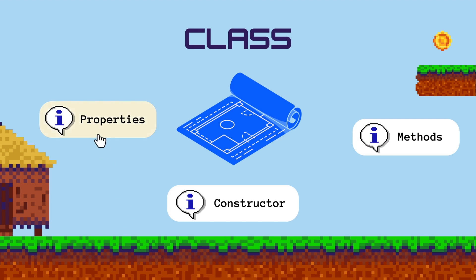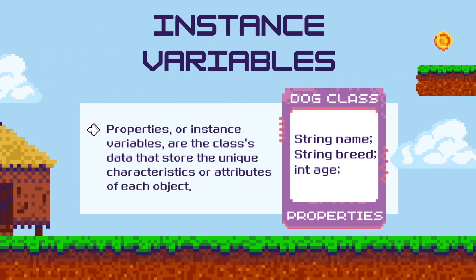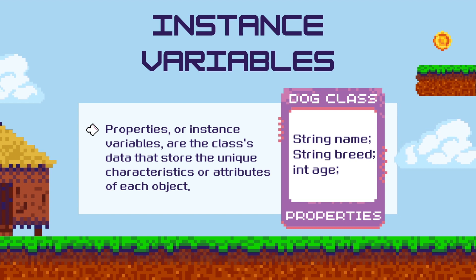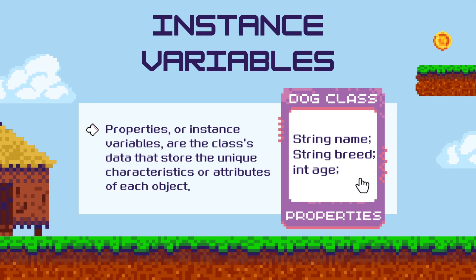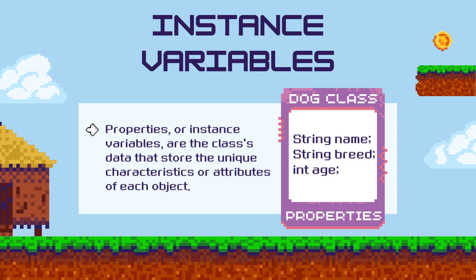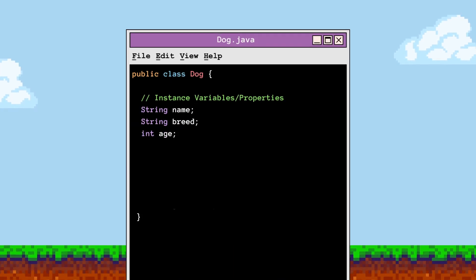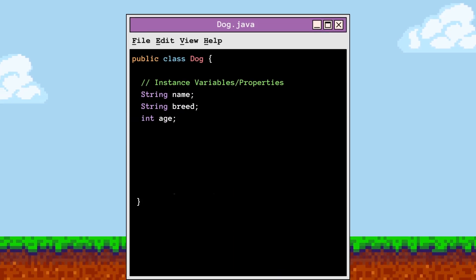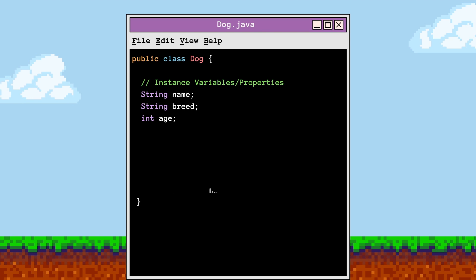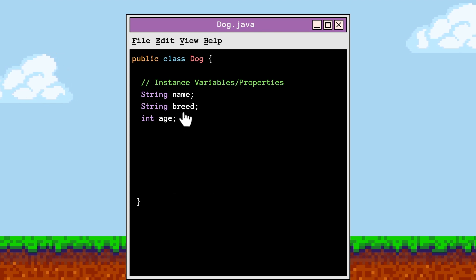The first component you'll come across are properties, also known as instance variables. These are variables within a class that hold unique data for each object. They represent an object's attributes, such as a dog's name, breed, and age, storing specific values and defining the object's current state. We will be declaring three instance variables — name, breed, and age — where the name variable holds the dog's name, the breed variable stores the breed, and the age variable holds the age.